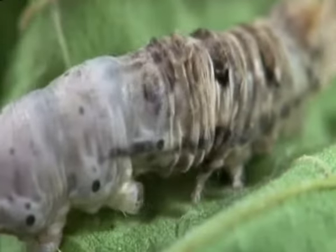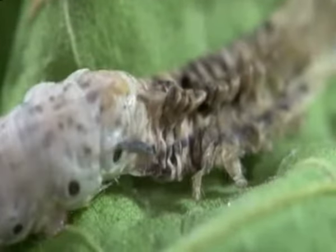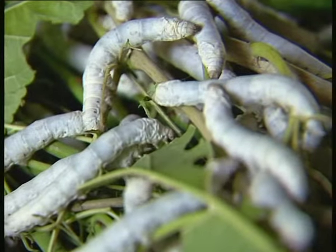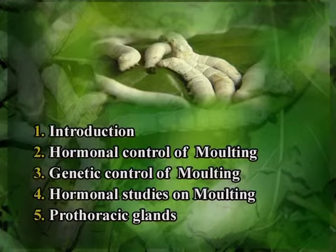Malting in silkworm. Generally, insects undergo a periodical moulting wherein they shed their old skin and regrow new skin. This important physiological phenomenon occurs in almost all insects. Likewise, in silkworm also, moulting takes place at the larval span. The moulting of silkworm can be explained under the following headings: number one, introduction.